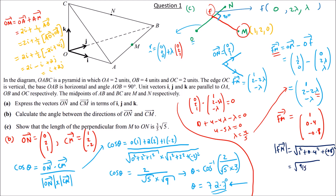So |FM| = √(9/5) = √9 / √5 = 3/√5. Rationalising the denominator: (3√5) / (√5 × √5) = (3√5) / 5 = 3/5 × √5. Thus the length of the perpendicular from M to ON is (3/5)√5.